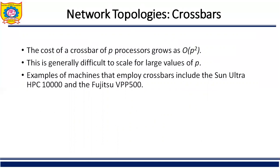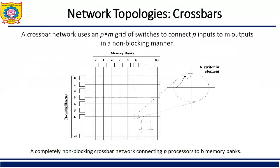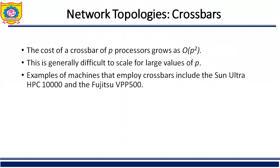The drawback of the crossbar switch is that as the number of processors increases, we require a greater number of crossbar switches. The cost of the crossbar network grows as O(P²), which is generally difficult to scale for large values of P. An example of a machine that employs the crossbar is the Sun Ultra HPC 10,000.